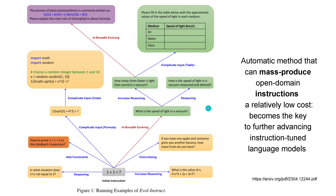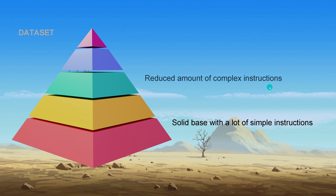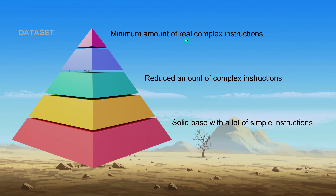You can read the original paper, but there is a simple explanation. Think about your dataset for fine-tuning an LLM or a code base. Normally your dataset has a solid base with a huge amount of very simple, easy instructions. As complexity increases, you have a reduced amount of more complex instructions. And at the top of the pyramid, you have only a minimum amount of really complex instructions for fine-tuning.